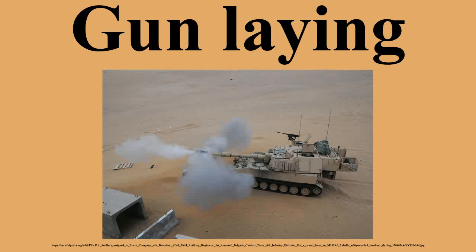Gun laying may be for direct fire, where the layer sees the target, or indirect fire, where the target may not be visible from the gun. Gun laying has sometimes been called training the gun. Gun laying in the vertical plane uses data derived from trials or empirical experience. For any given gun and projectile types, it reflects the distance to the target and the size of the propellant charge, and also incorporates any differences in height between gun and target. With indirect fire, it may allow for other variables as well.